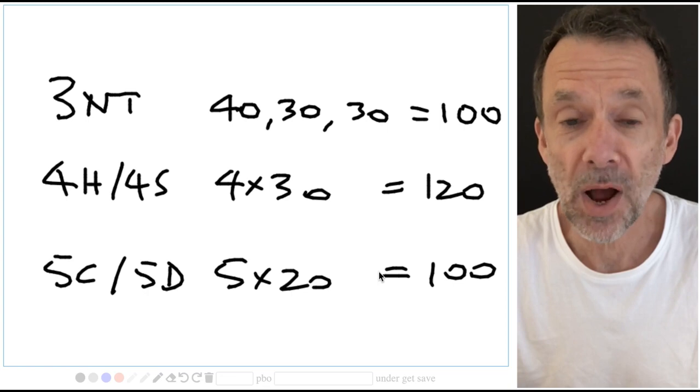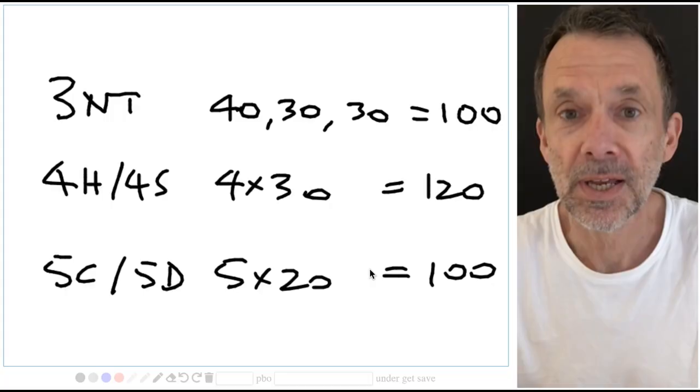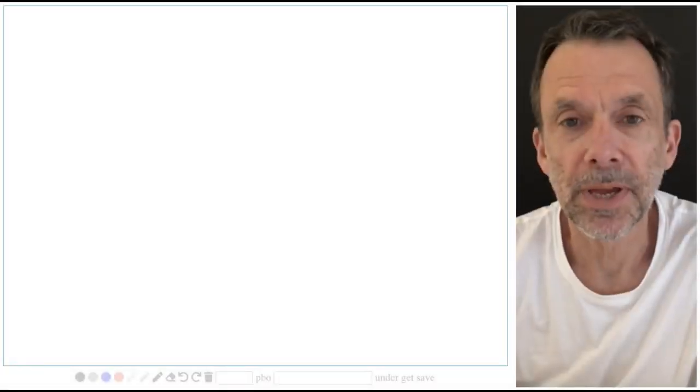So now you know why three no trumps, four hearts, four spades and five clubs, five diamonds are game. Right back to work.